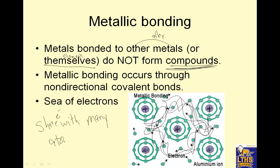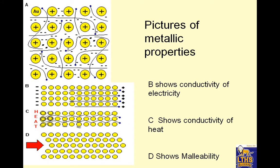The analogy I use is the stapler in the classroom — I share the stapler with everybody. Here's a stapler for Jaquan, here's one for Francisco, here's one for Jennifer, here's one for Nicole. And they're all there. Here's a picture of metallic bonding — notice how the electrons are kind of all over the place.